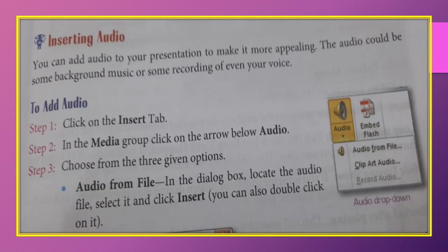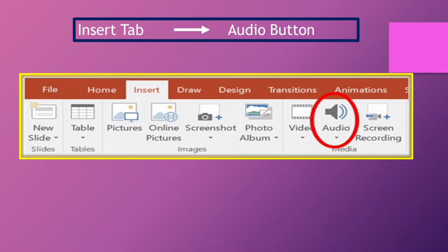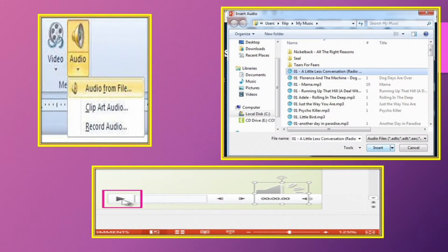Inserting Audio. You can add audio to your presentation to make it more appealing. We can insert music or recording into our presentation to make it more attractive and effective. To add audio, click on the Insert tab, then click on the Audio button. Choose from the three given options. First is Audio from File — in the dialog box, select the audio file and click on the Insert button.